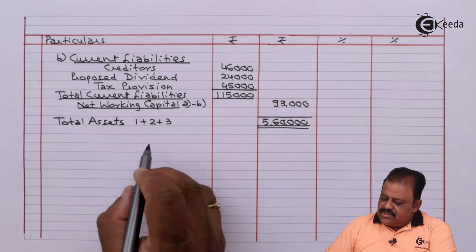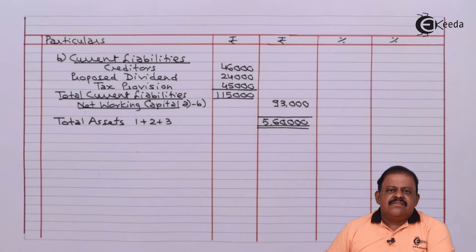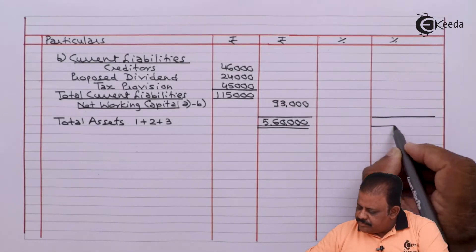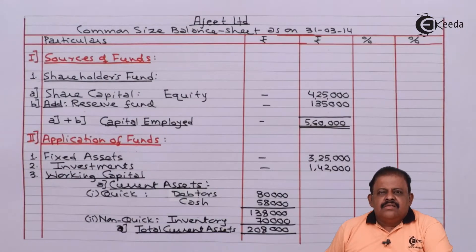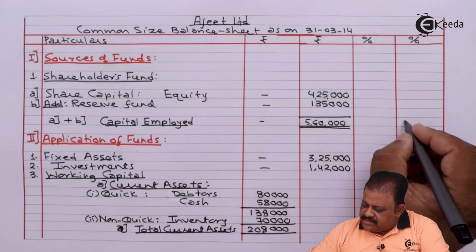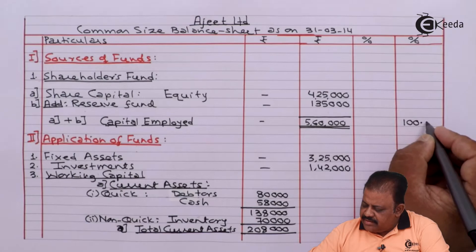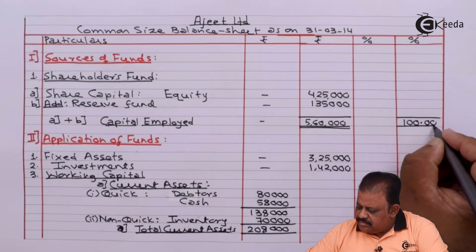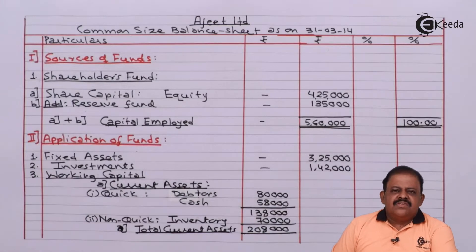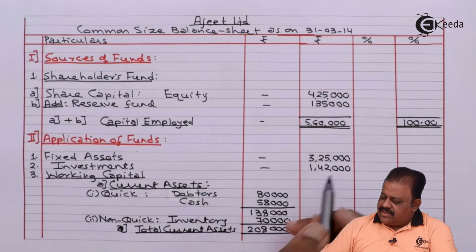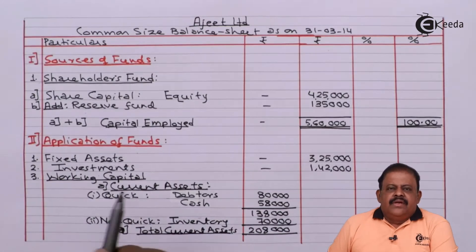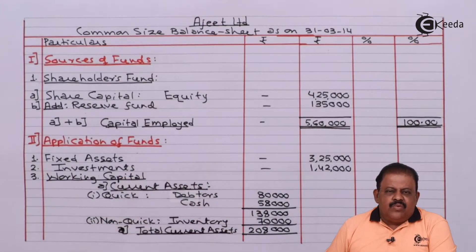For that purpose, total assets will be taken as 100. Similarly, total capital employed will be taken as 100. Common size means all the values in the balance sheet will be converted into a number less than 100 so that it becomes easy for analysis. For that purpose, the base is taken as capital employed, which equals 100. Each and every figure in the balance sheet will be converted accordingly.